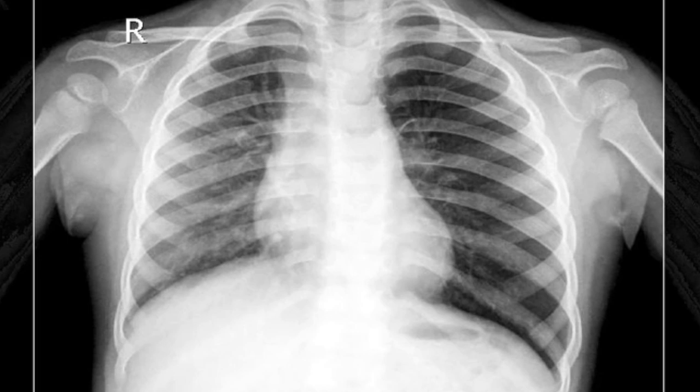Case 6: a 2-year-old child presented with cough and mild respiratory distress since the last 2 days. X-ray shows increased translucency on the left, mild mediastinal shift to the right, lowering of the left dome of the diaphragm, and splaying of vessels on the left. All these observations are consistent with partial foreign body obstruction in the left bronchus — a typical ball-valve type of obstruction where air can go in but cannot come out and is trapped in the lungs. Friends, we cannot afford to miss this diagnosis; it is absolutely life-saving.